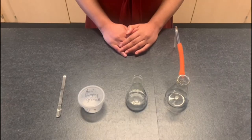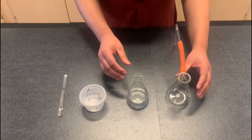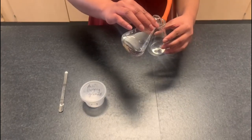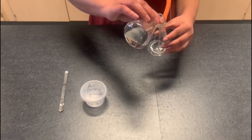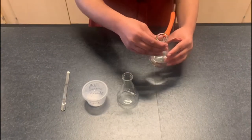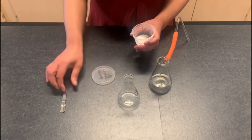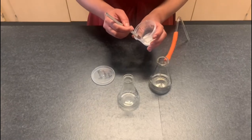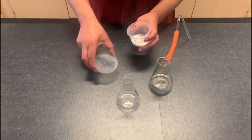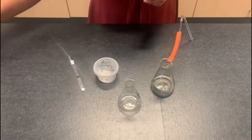I will now talk you through activity three which is the desalination of seawater. Firstly what we need to do is pour the rest of the seawater sample into the conical flask. I will then add some anti-bumping granules into the solution and we do this to stop the seawater from spitting.